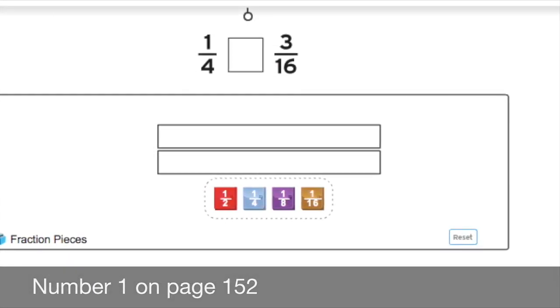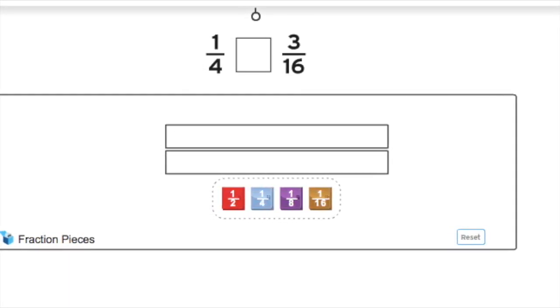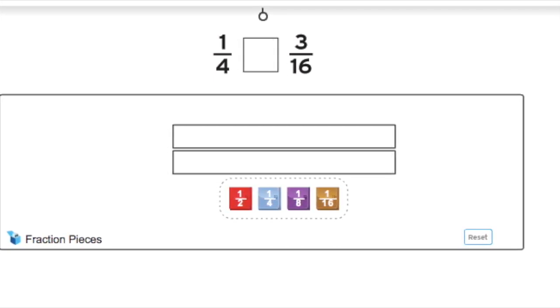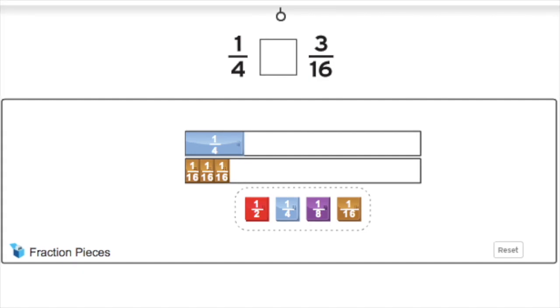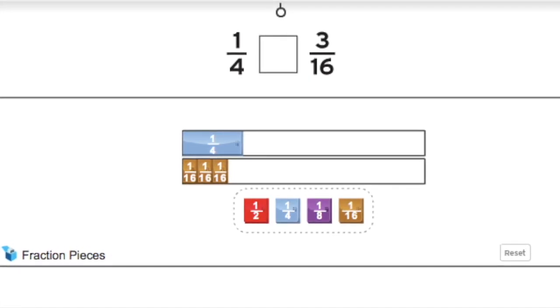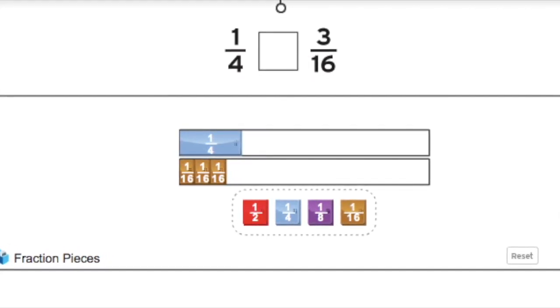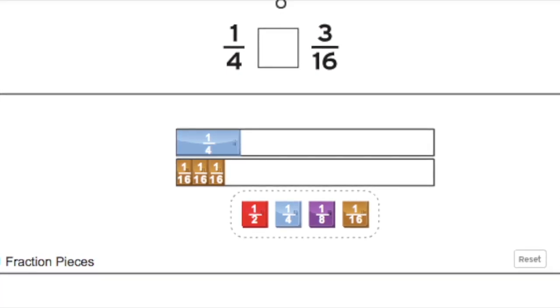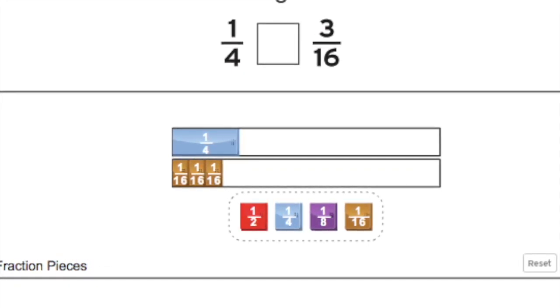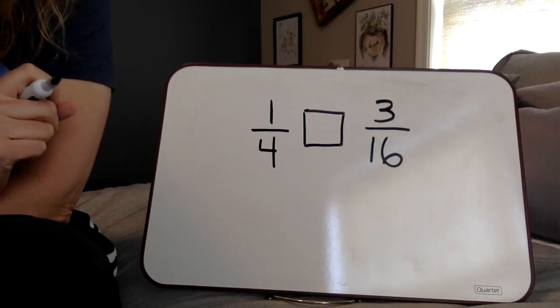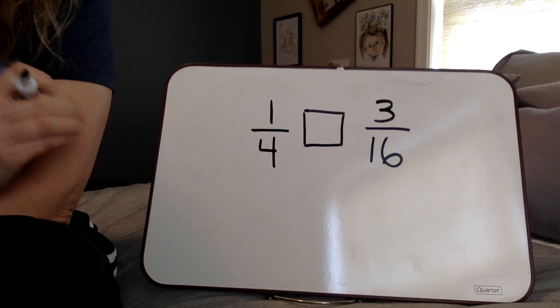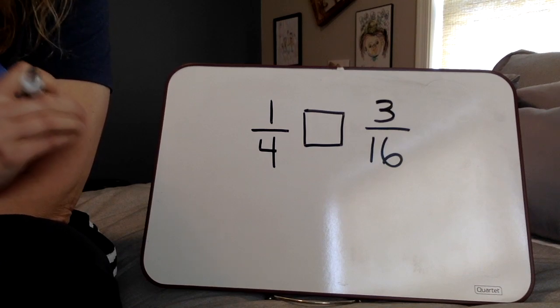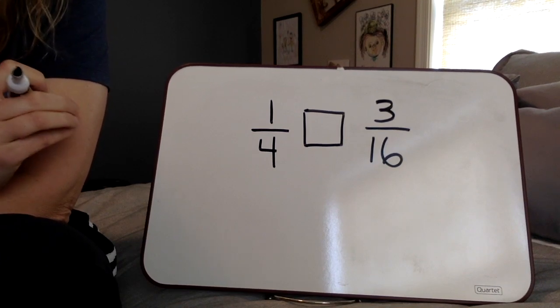For the next problem we're going to compare 1/4 and 3/16. Starting again, we're going to place the 1/4 and the three 1/16 pieces that make that fraction, and then we're going to look at the model to compare them to see which has a greater value. When we looked at that model we could see that 1/4 took up a little bit more space within the model than 3/16 did, which makes it the greater fraction.